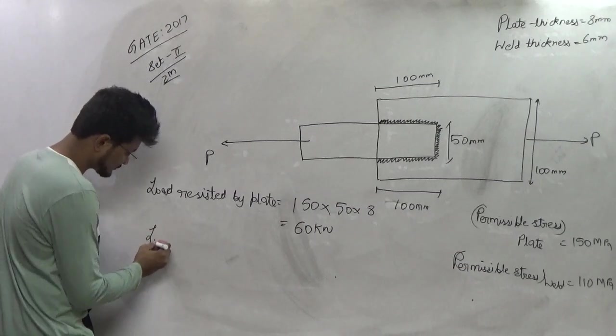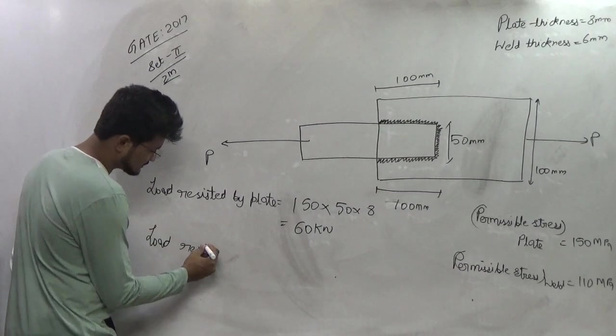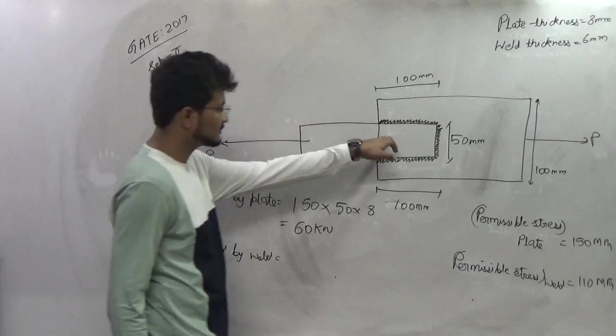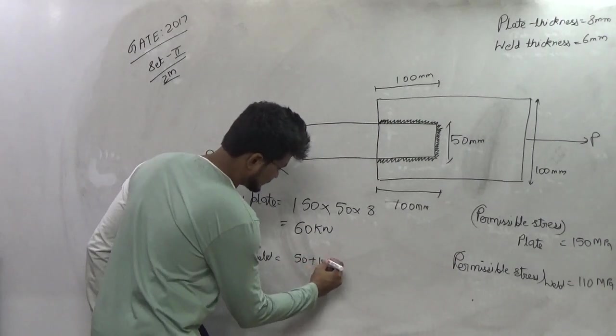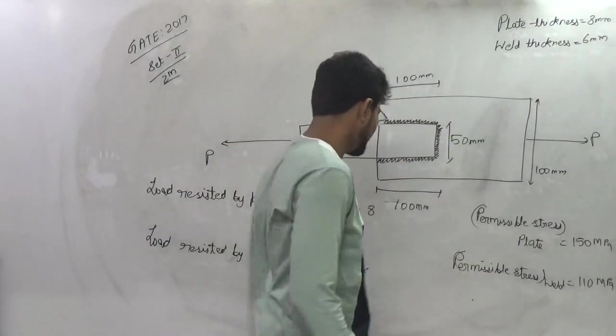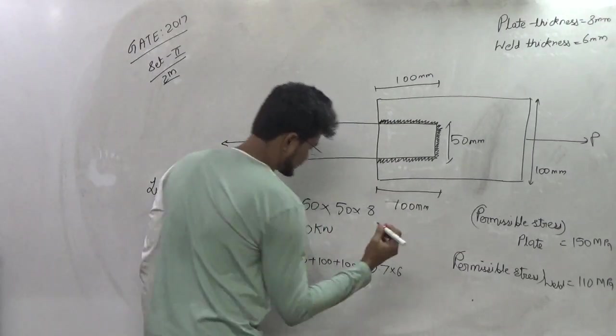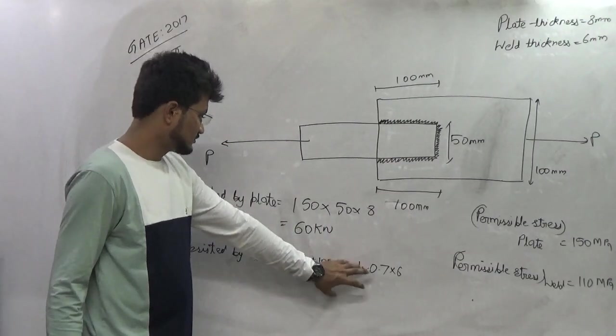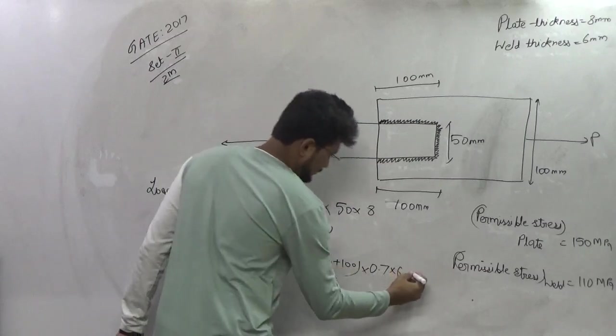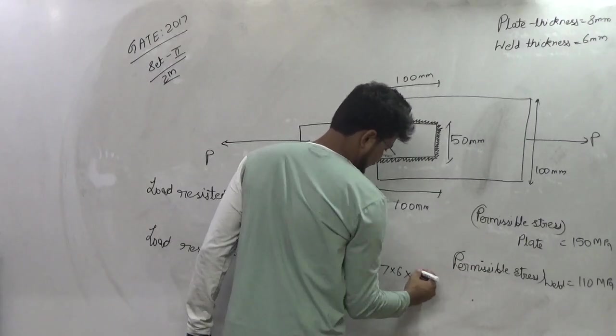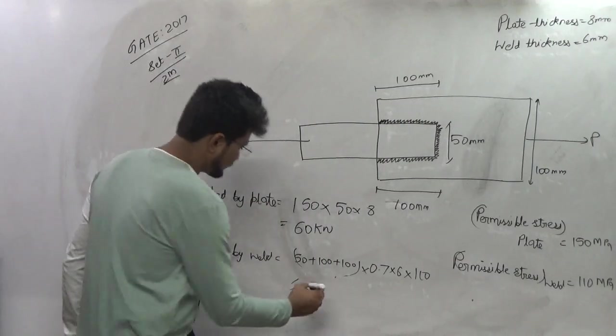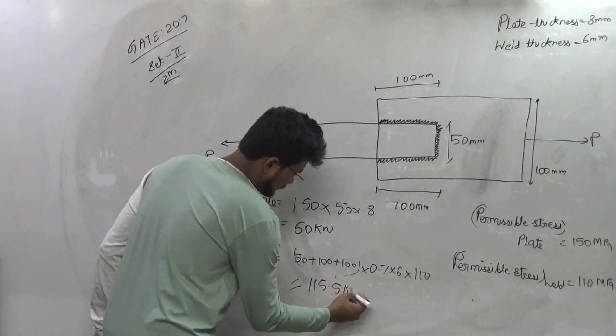And the load which can be resisted by weld is equal to total length of the weld which is 50 plus 100 plus 100. Effective throat thickness will be 0.7 times the weld thickness which is 6mm. Now this is the area of the weld which we have applied in this particular form of fillet welding. Now this area multiplied by the permissible stress of weld which is 110 MPa comes equal to 115.5 kN.